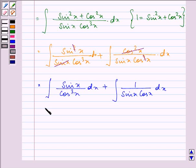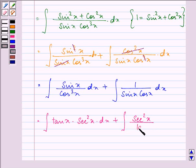Now here we can write this function as tan x into we are left with 1 upon cos square x which can be written as secant square x into dx plus here we can write secant square x divided by tan x into dx.